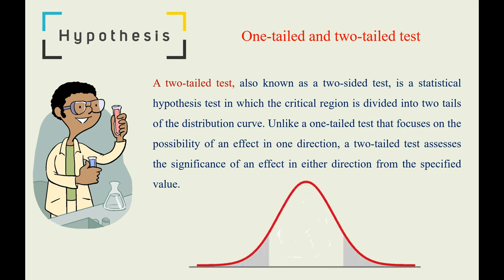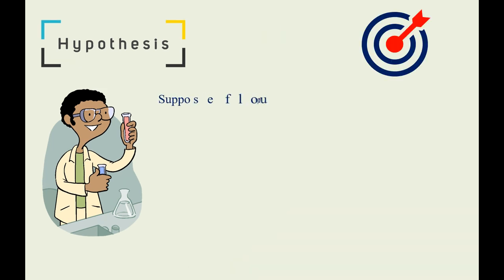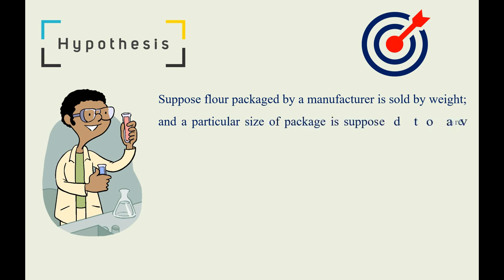Let's take a look at examples. Suppose flour packaged by a manufacturer is sold by weight, and a particular size of the package is supposed to average 40 ounces.